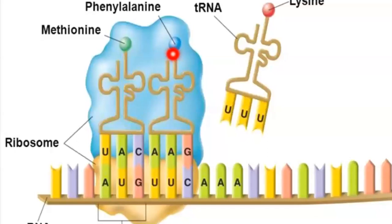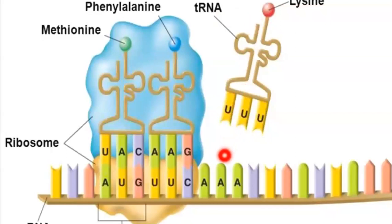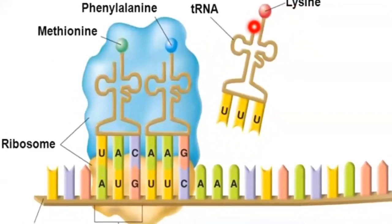Now there are two amino acids at the site. The ribosome shifts again and reads the third codon, which is AAA. For that, a tRNA with anticodon UUU is required. The third tRNA comes and sits on AAA making a codon-anticodon bond, bringing the third amino acid called lysine.